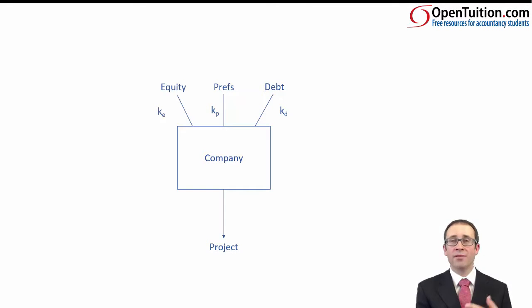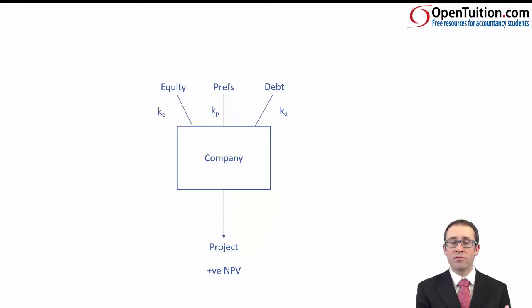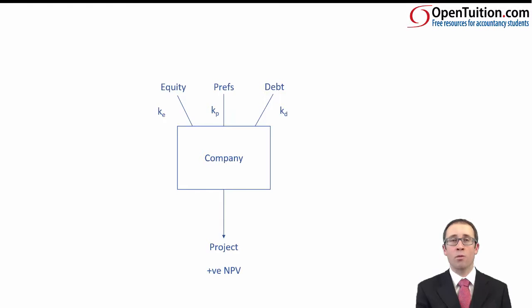When we're appraising a project, having raised the finance for it, we need to ensure that it generates a positive NPV, because that will then ensure that we have paid back the debt holders, the preference shareholders, and also the equity holders. When we're appraising a project, we use the NPV technique, which takes our cash flows and multiplies them by a discount factor. To work out the discount factor, we need an appropriate discount rate.